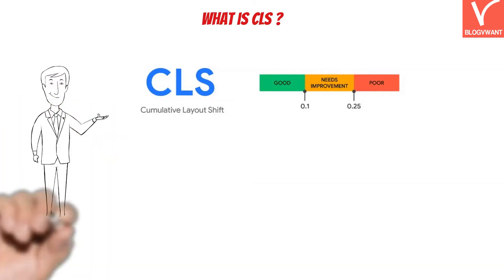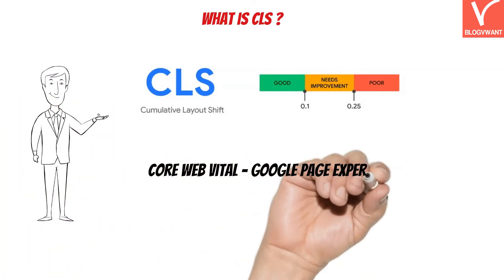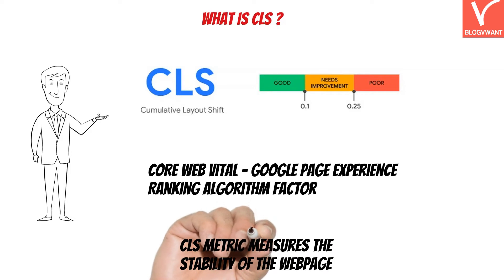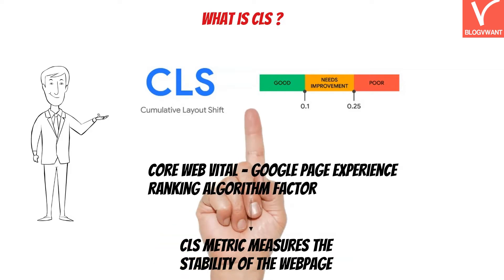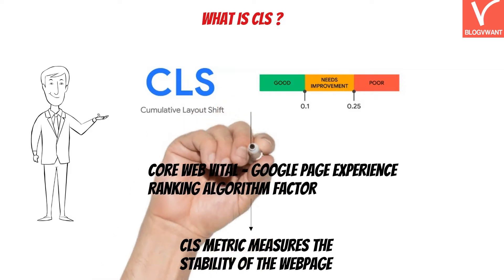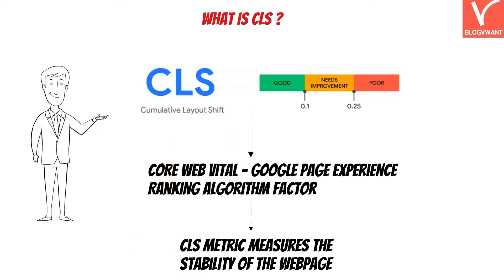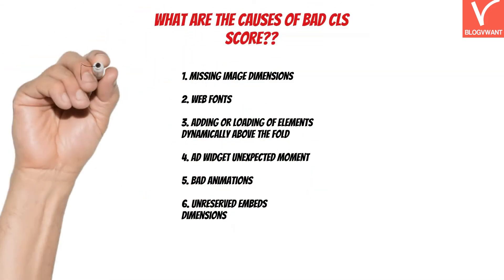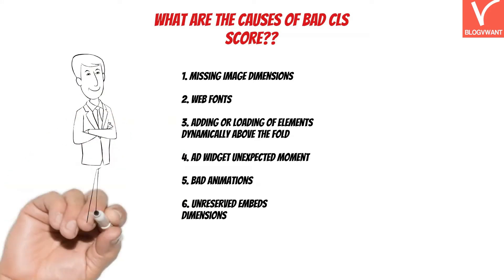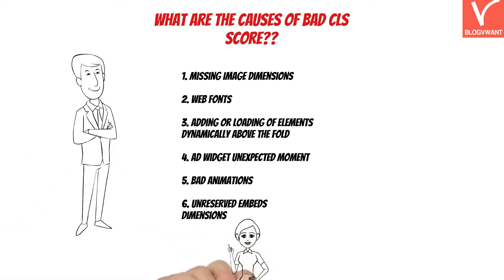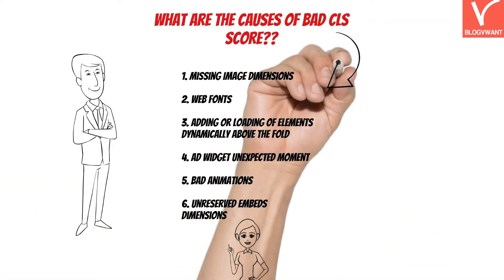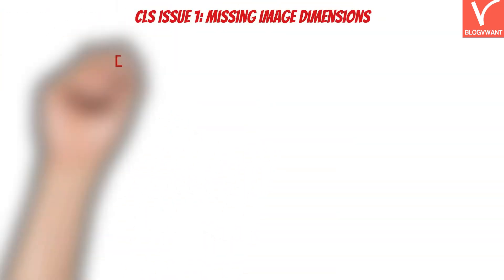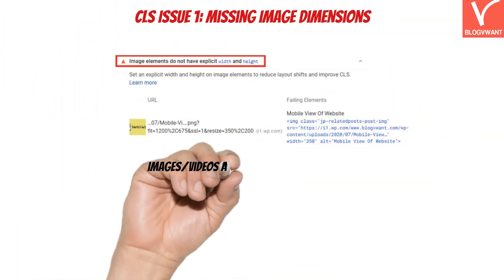CLS measures the stability of the webpage — in other words, how many elements of the webpage move or shift as the page loads. A webpage should maintain or score less than 0.1 CLS to provide a good experience. There could be a lot of reasons for high CLS scores. We are going to cover each CLS reason that could be shown in your Google PageSpeed Insights tool. Let's start with CLS issue 1: missing image dimensions.